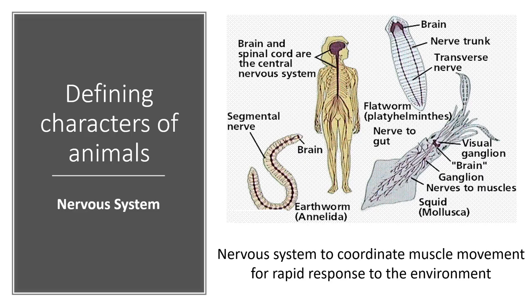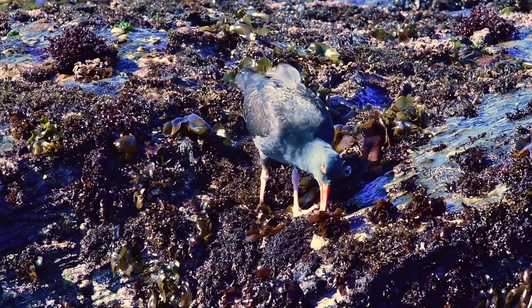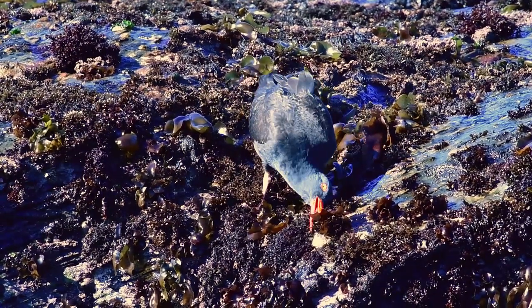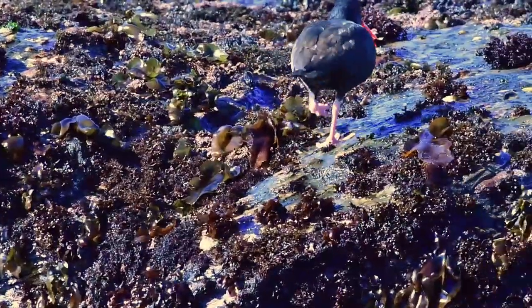Lastly, animals have a nervous system, which does several things: it coordinates the movement of all your muscles, and it also coordinates all your sensory inputs. That's why we have most of our senses — eyes, nose, ears — on our face, because we encounter the world head first. We use those sensory inputs and then respond to our environment based on our senses.